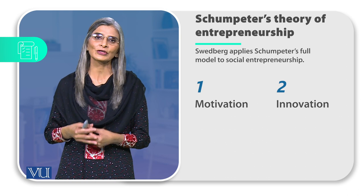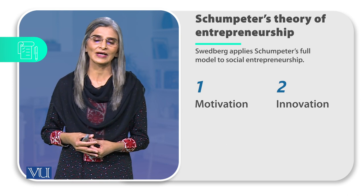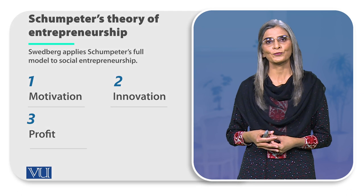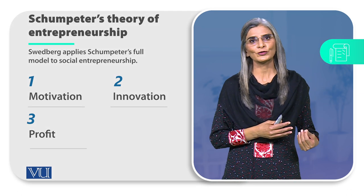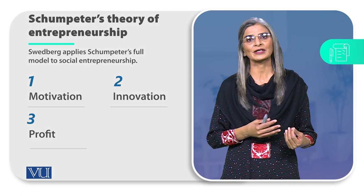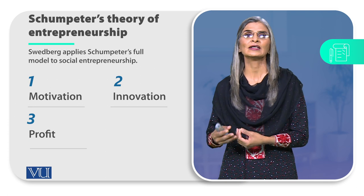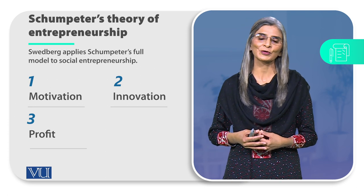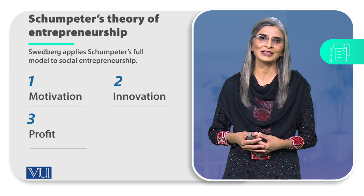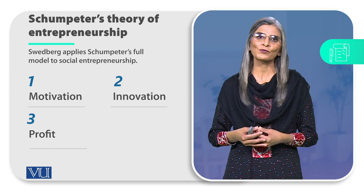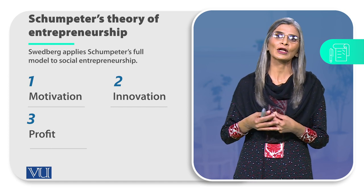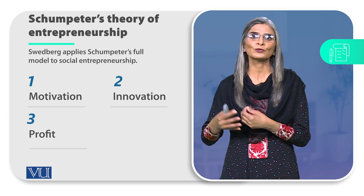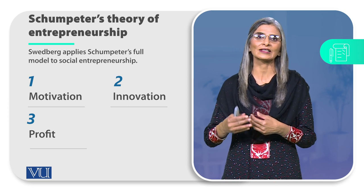Social change के different perspectives में से कोई नया perspective — ये सब चीज़ें social entrepreneur के innovation में आ जाती हैं। तीसरे number पर profit आता है। Schumpeter के मुताबिक entrepreneur monetary profit कमाता है, लेकिन social entrepreneur का profit value addition है — वो social impact है जो वो लाखों लोगों की ज़िंदगियों में लाता है।